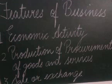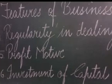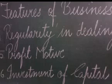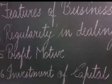So here we have completed all six features of business: it is an economic activity; it involves production or procurement of goods and services; it involves selling or exchange of goods and services between buyers and sellers; it involves regularity in dealing; it is undertaken with the motive to earn profit; and capital is required to run a business. Here we have completed today's topic. Tomorrow we are going to take another topic of business studies. Thank you.